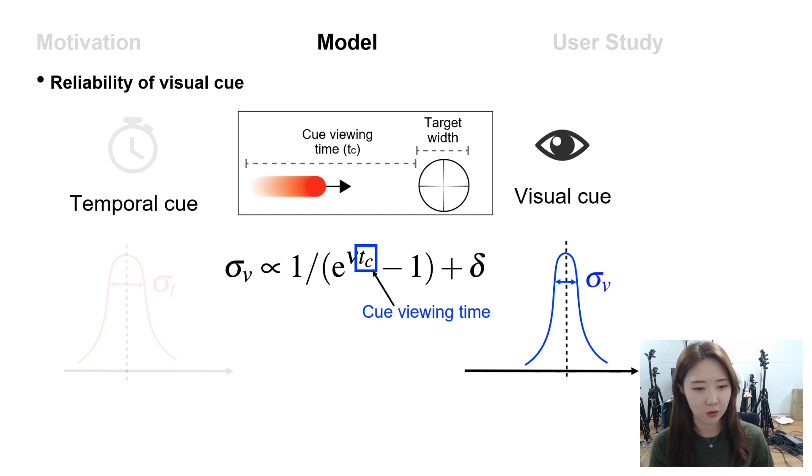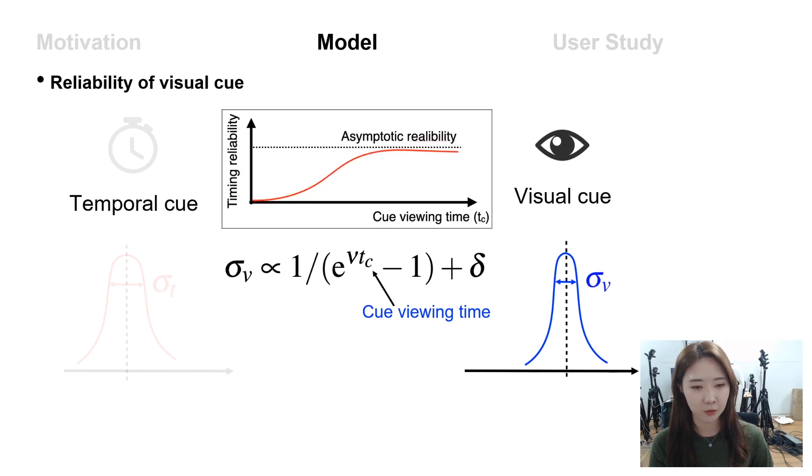This time is called cue viewing time. When Tc is zero, the standard deviation will be very large because that means no cue viewing time is given to the user. Contrary, if Tc is very long, that means the time to receive information becomes very long, and the standard deviation will converge to the delta.